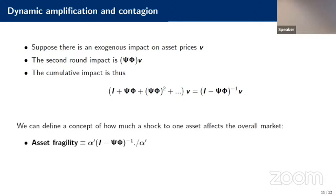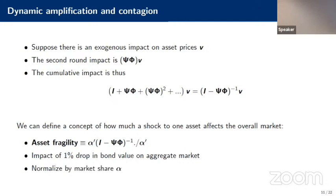This gives us an expression for what we call asset fragility: given a price shock to a given asset, what is the effect on the overall aggregate market? What does a 1% drop in one bond value do to the aggregate market? We weight this by the market share of each asset relative to the whole market. If there's no amplification and contagion, this internal expression equals 1 — that's just the normalization. We'll come back to this once we do the estimation.